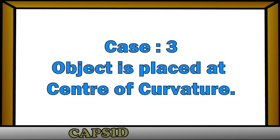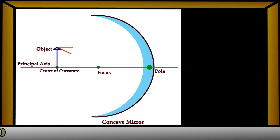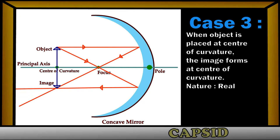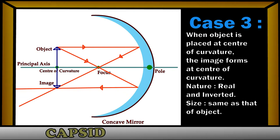Case 3: the object is placed at the center of curvature. When the object is placed at the center of curvature, the rays coming from the object meet at the center of curvature after reflection through the concave mirror. So the image of the object forms at the center of curvature of the same size, and the nature of the image will be real and inverted.